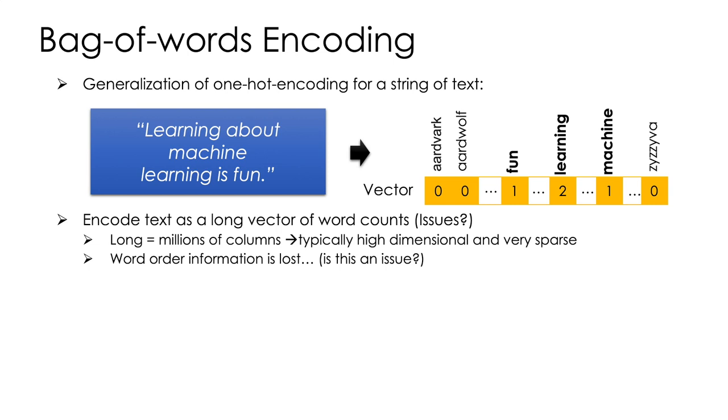The other problem with the bag of words encoding is that word order information is lost. So we lose things like negation. In many cases, that's all right. Reading this vector, you kind of get a sense this is about learning and machines being fun, or machine learning being fun. It's captured sort of in this count what this sentence is about. This doesn't work as well in sentences with words like not that might contradict the meaning of the other words in that sentence.